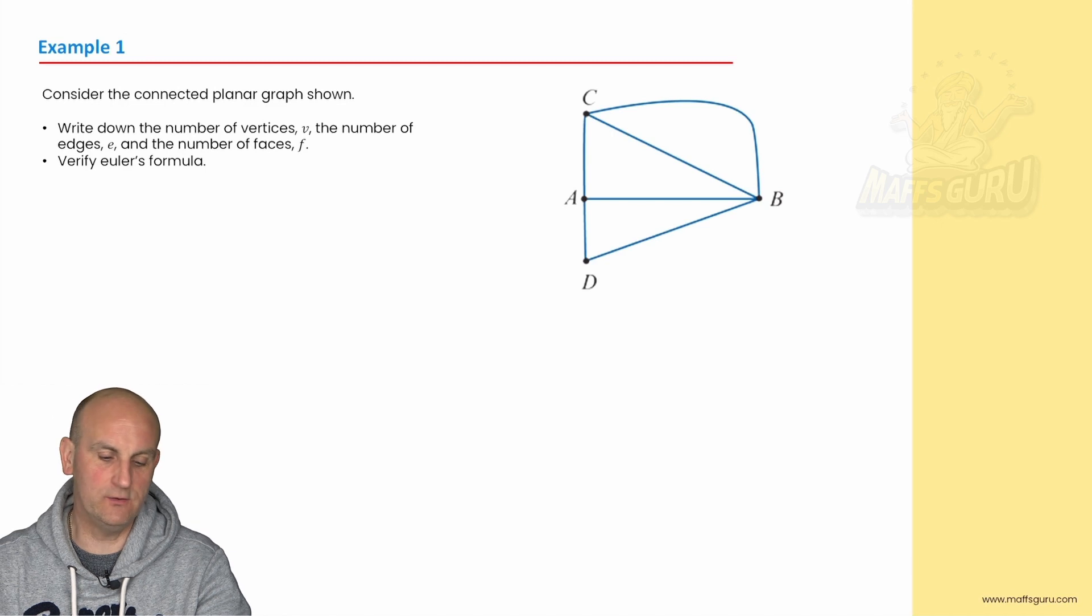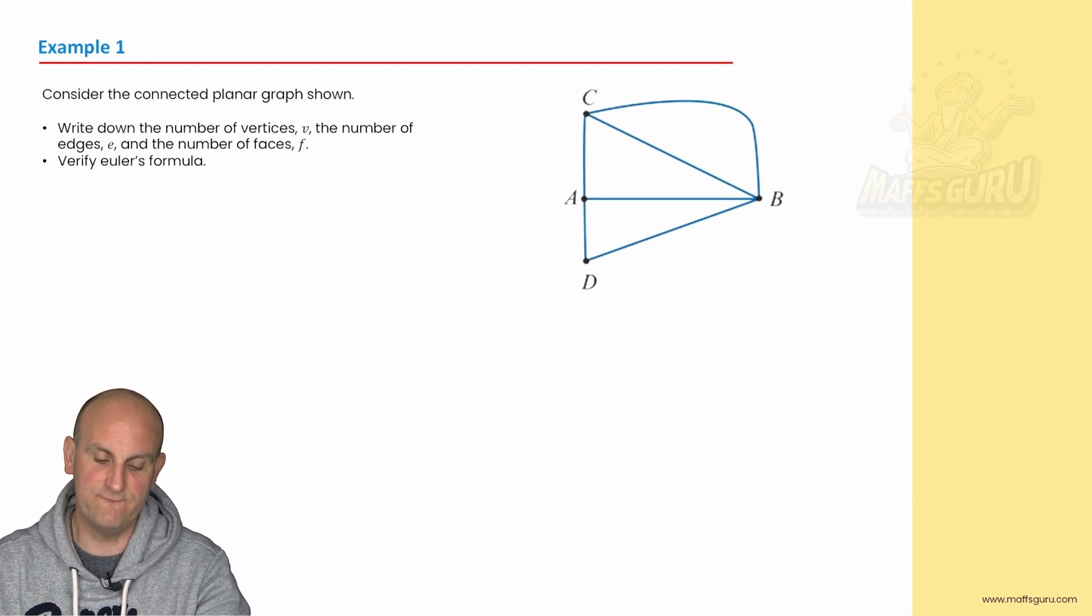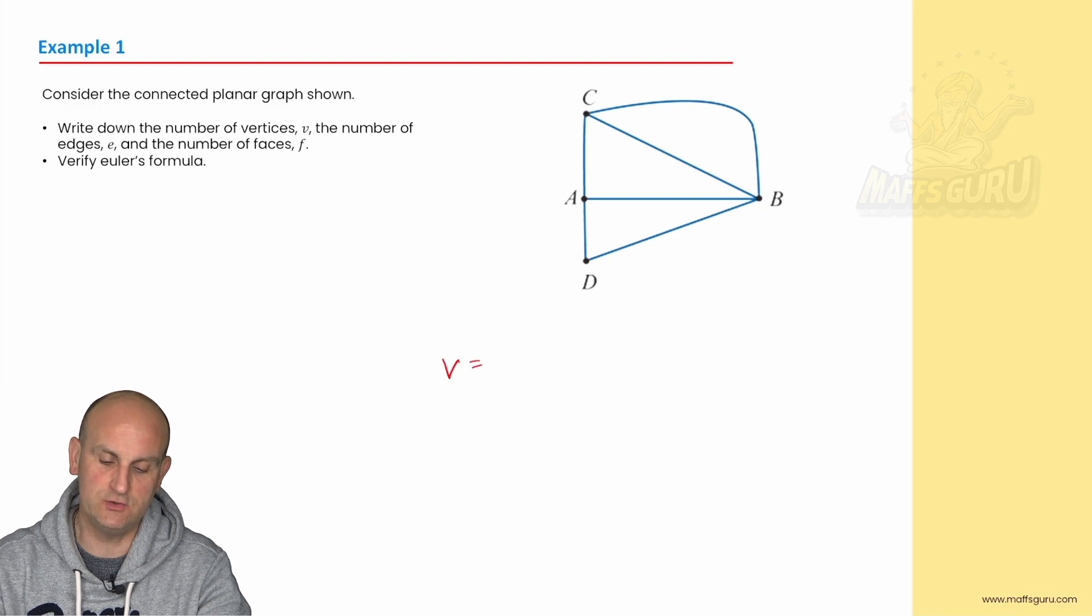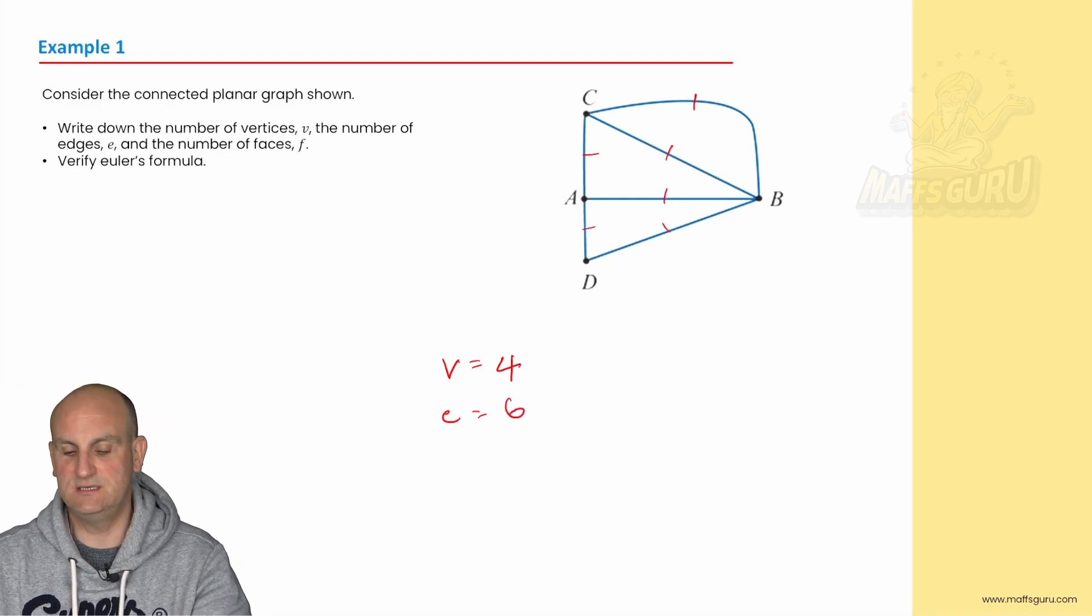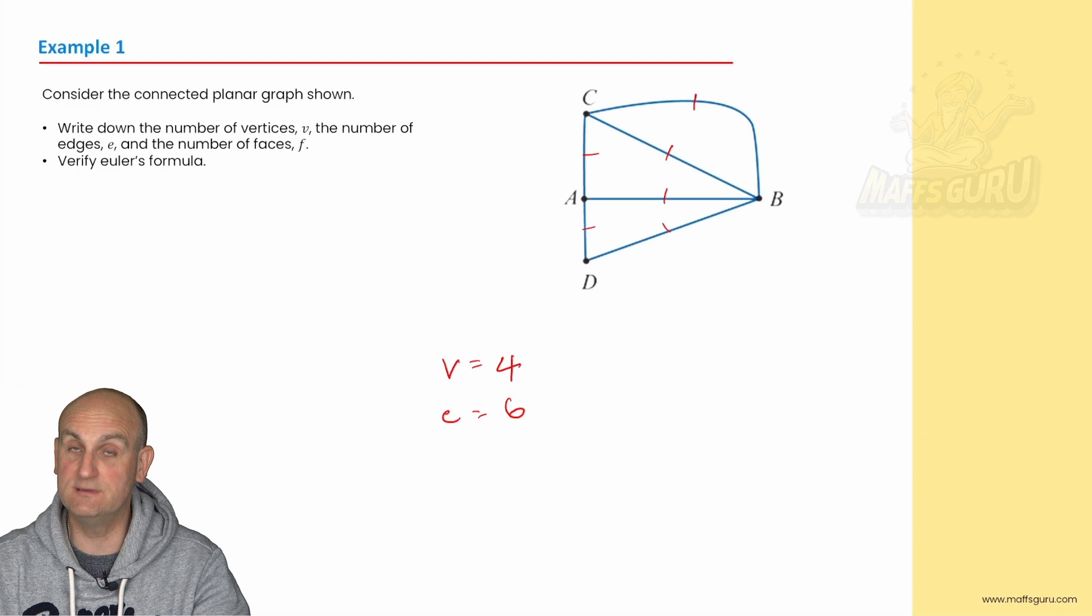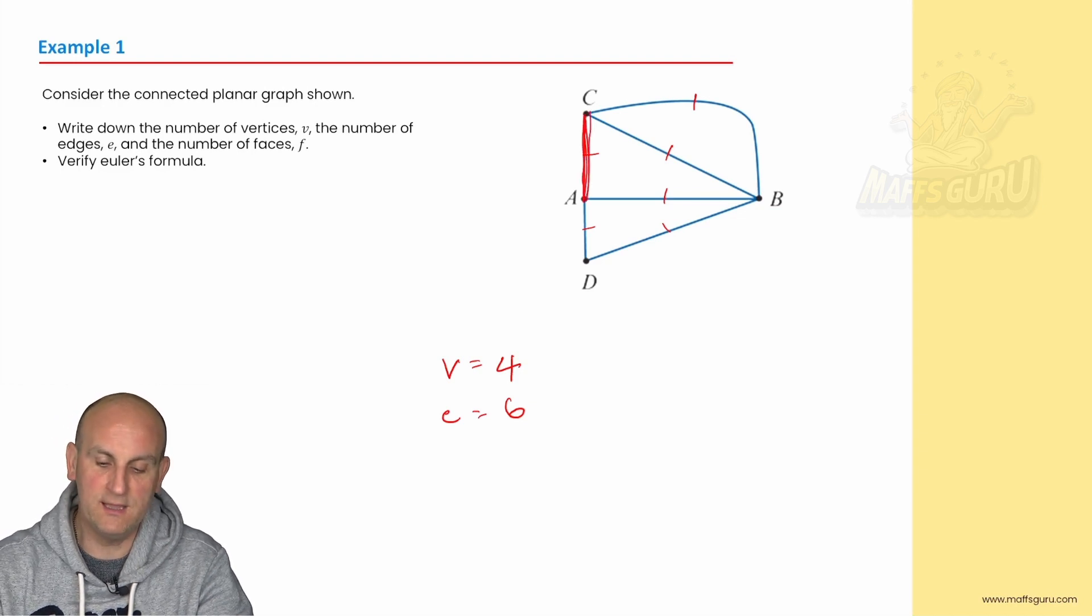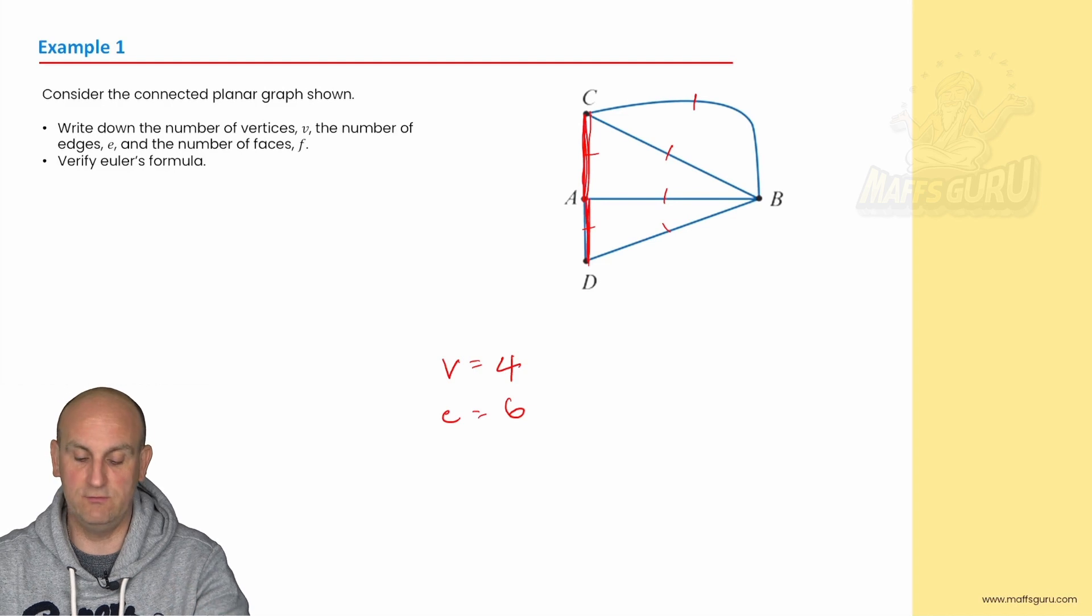So let's have an example. Consider the connected planar graph shown. Write down the number of vertices V. So V equals 1, 2, 3, there are 4. The number of edges E equals, I always put a line through them, 1, 2, 3, 4, 5 and 6. Now interestingly my group when I was teaching this said well no there's only one connection between C and D. And I was like no there isn't. There is every time it's broken up by a journey or a town there are actually two edges there. So try not to get tricked that's really important.